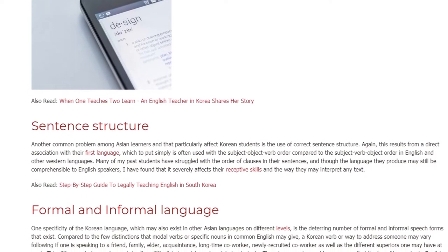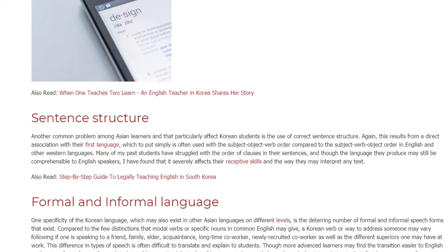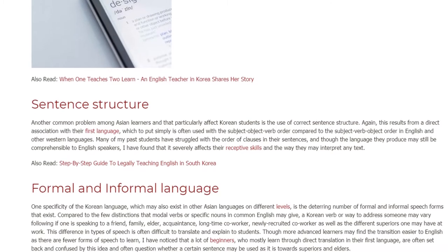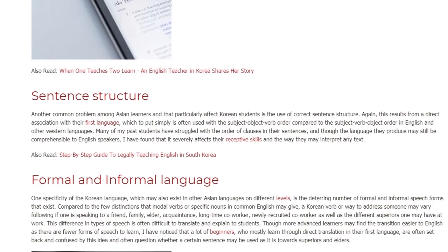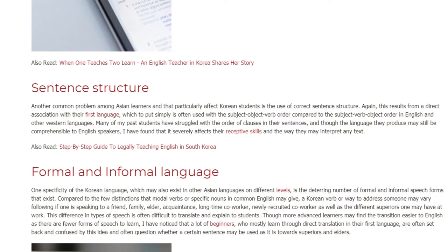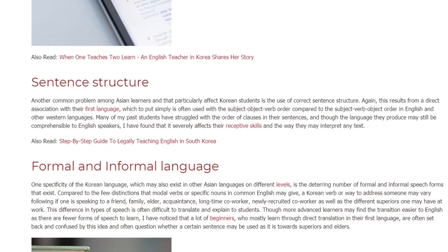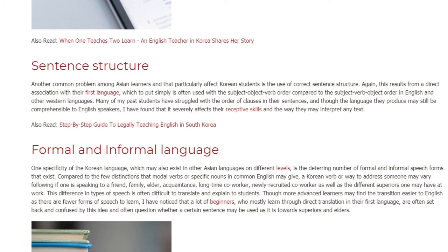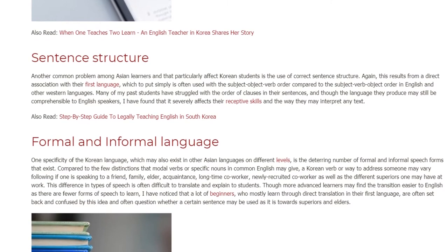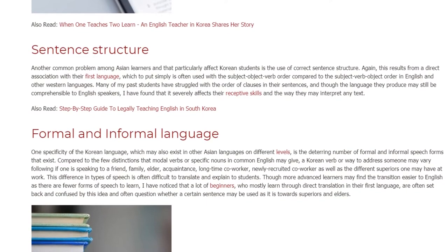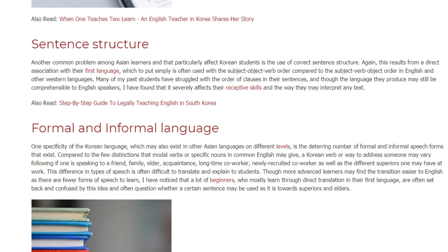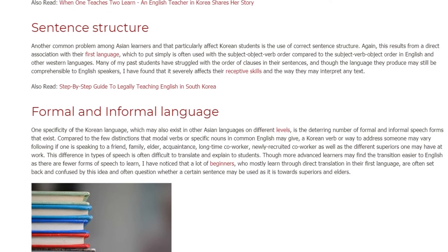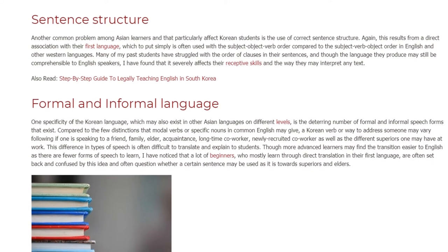Formal and Informal Language. One specificity of the Korean language, which may also exist in other Asian languages on different levels, is the deterring number of formal and informal speech forms that exist. Compared to the few distinctions that modal verbs or specific nouns in common English may give, a Korean verb or way to address someone may vary depending on whether one is speaking to a friend, family, elder, acquaintance, long-time co-worker, newly recruited co-worker, as well as the different superiors one may have at work. This difference in types of speech is often difficult to translate and explain to students.